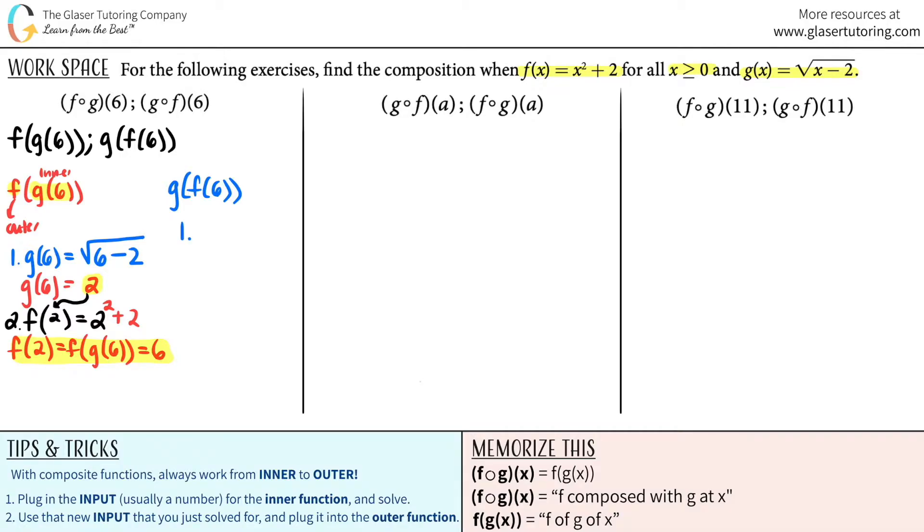The first thing that we got to do is do the inner function now. So that's f of 6. So I find the f function, x squared plus 2, plug it in. So this would now be 6 squared plus 2. So 6 squared plus 2 is 36 plus 2 is 38. So f of 6 is 38. Because 6 times 6 is 36 plus 2 is 38.